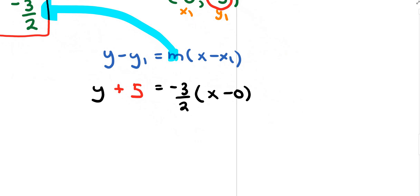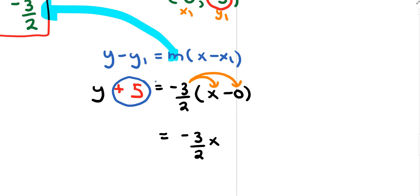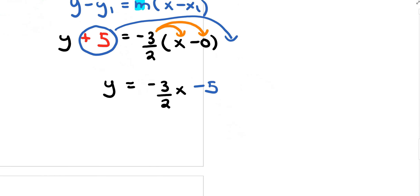Distributing gives negative 3 over 2x, and negative 3 over 2 times 0 is 0. Bringing the positive 5 over to the right-hand side, it becomes negative 5. So y equals negative 3 over 2x minus 5, which is slope-intercept form.